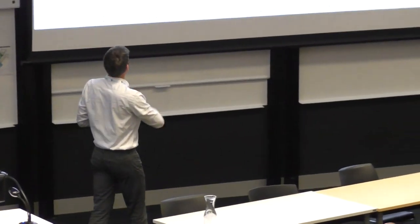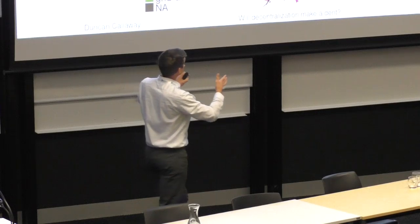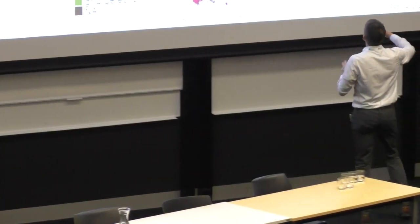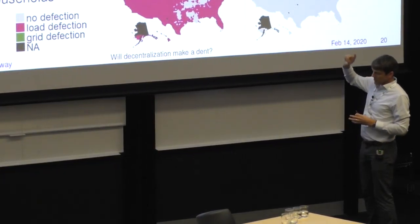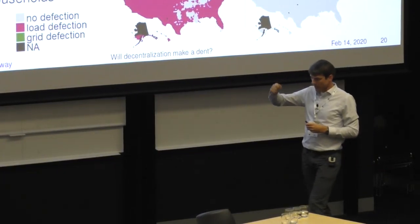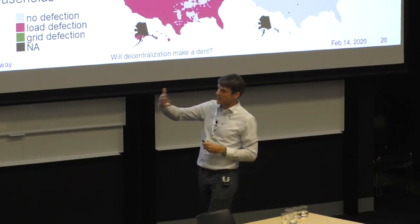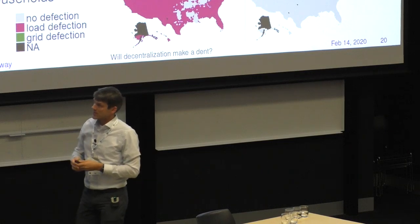The second case: flexible load. The customer receives 99% of energy in their load profile, but is never completely without power — 300 watts is always available to power critical loads. In this case we see much more grid defection happening, which drives home the importance of understanding what customers prefer with respect to the reliability and characteristics of service from a standalone system.